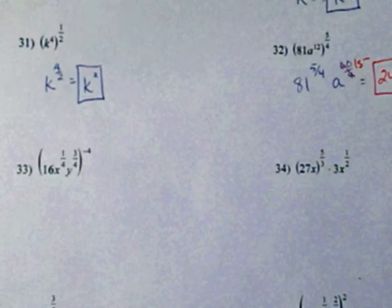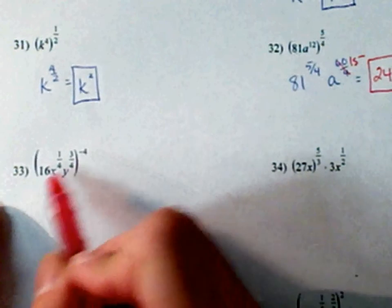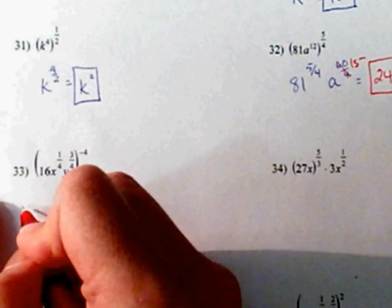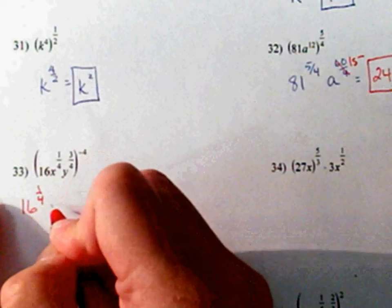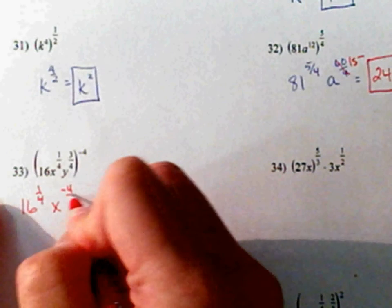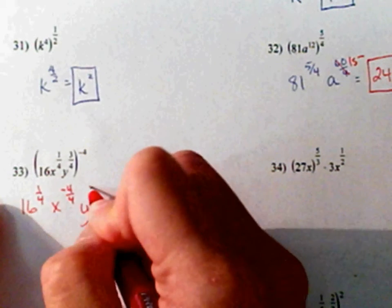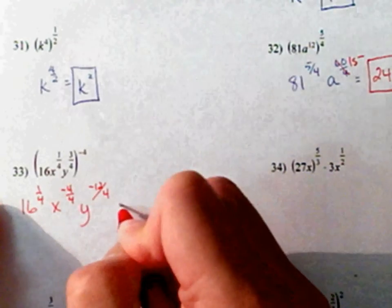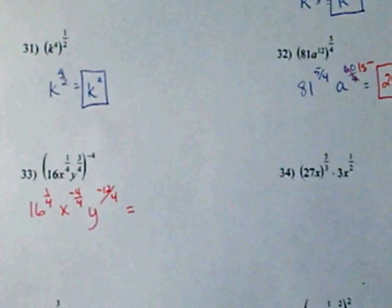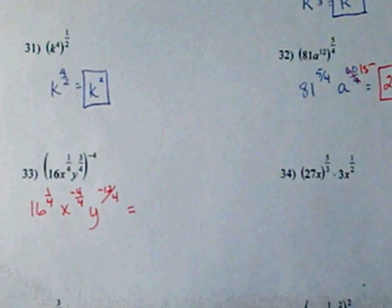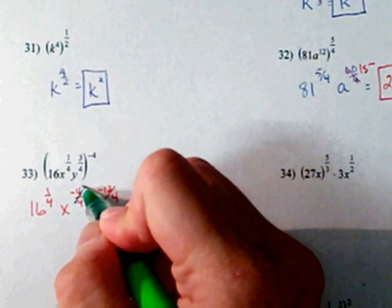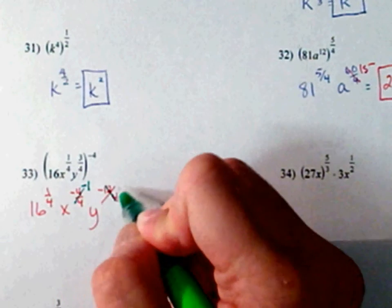Number 33. Negative 4 goes to the 16 also. So, this is the same thing as 16 to the 1/4, x of negative 4 to the 4th, y of negative 12 to the 4th. And let's go ahead and simplify what we can. This comes out to be negative 1. This comes out to be negative 3.